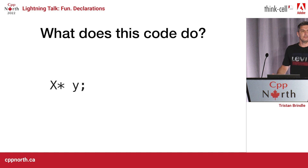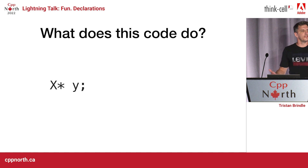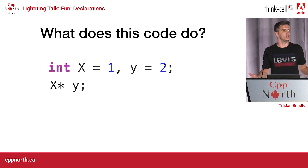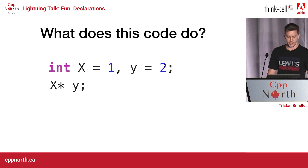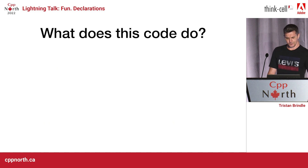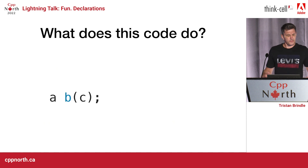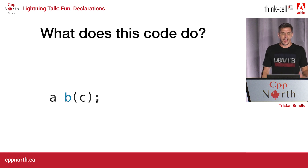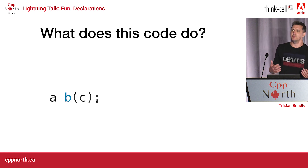We're all very experienced C++ programmers here. We can all look at this and use our years of experience — and we know that this is a multiplication, right? I mean, just obviously, right, it just jumps out at you. And very similarly, here we've got a b paren c.